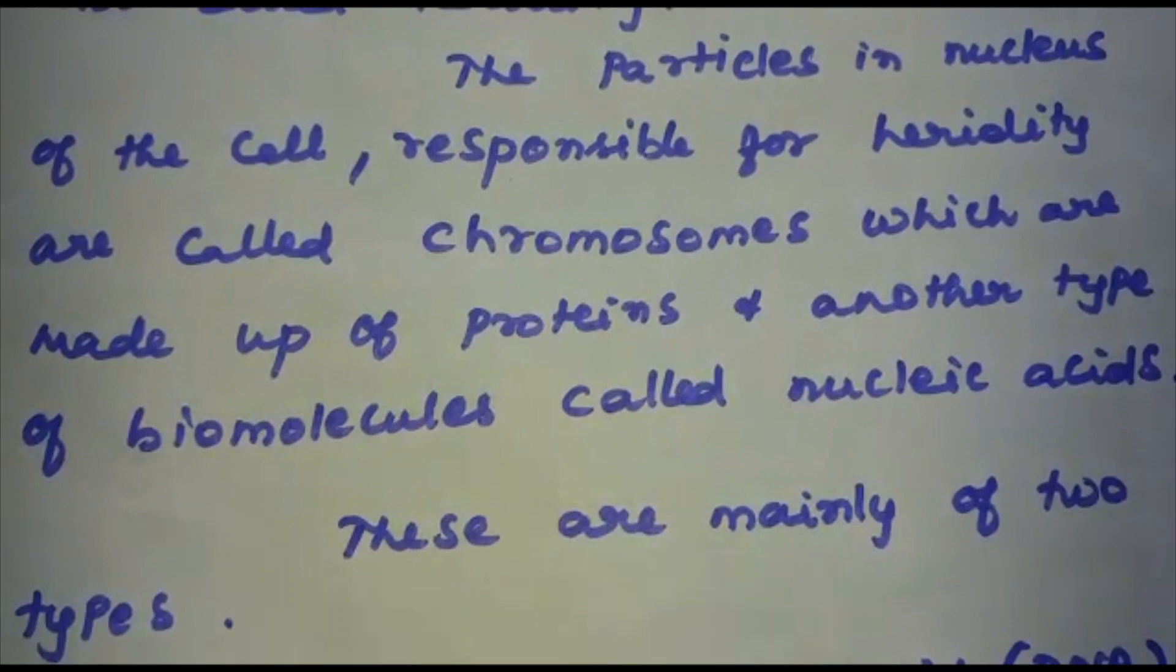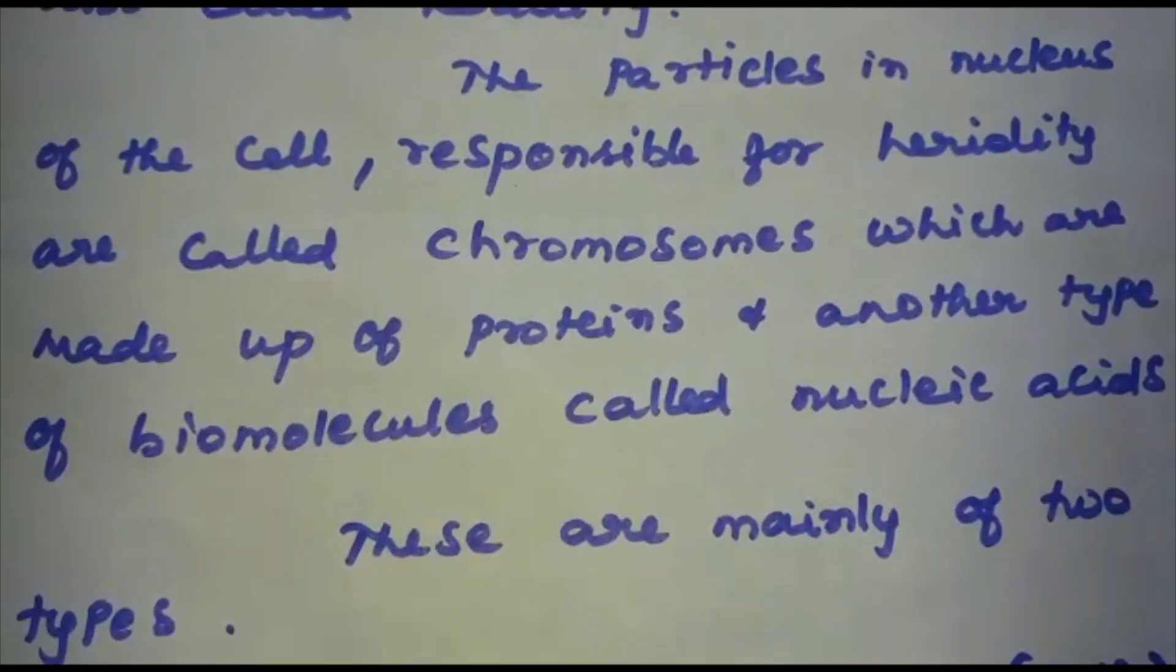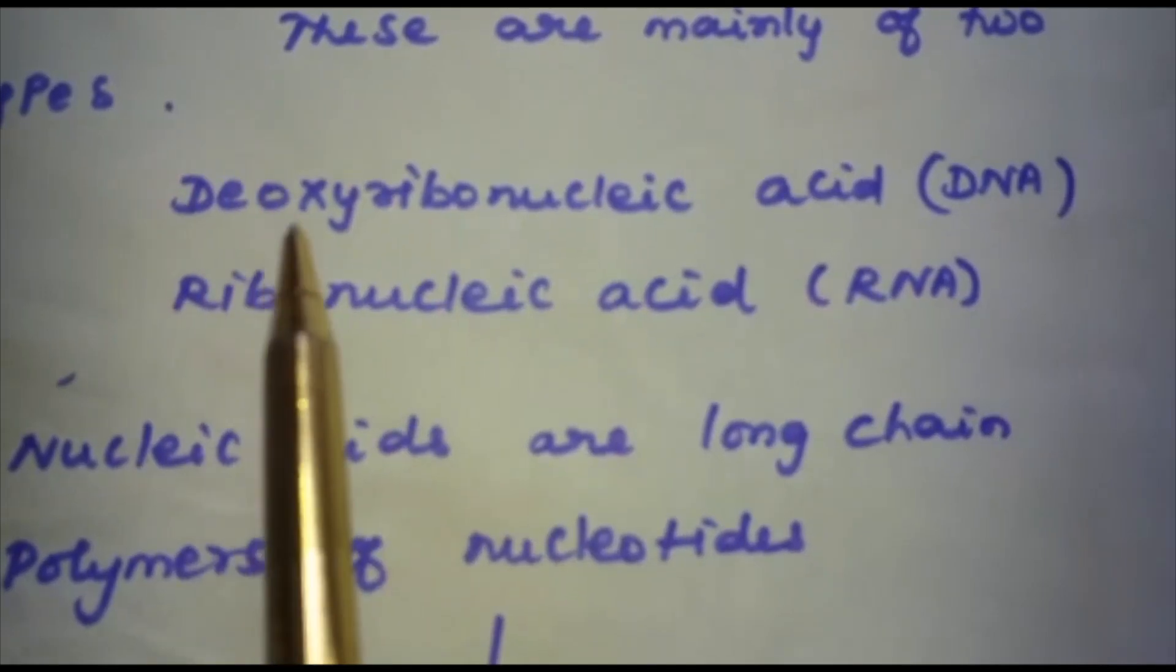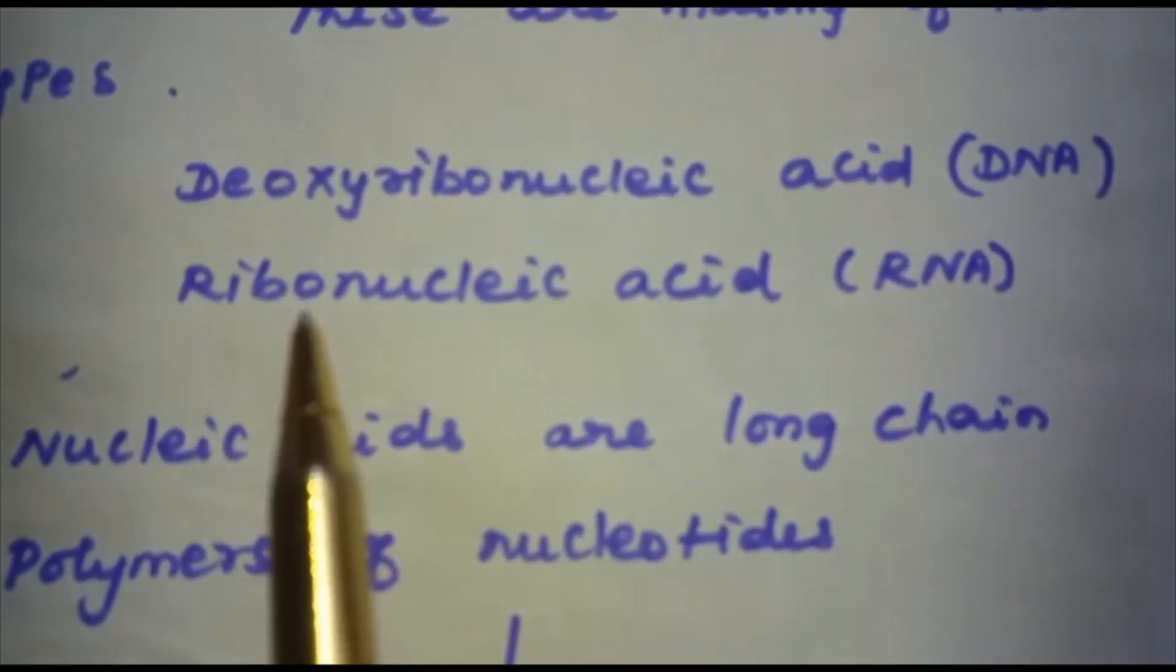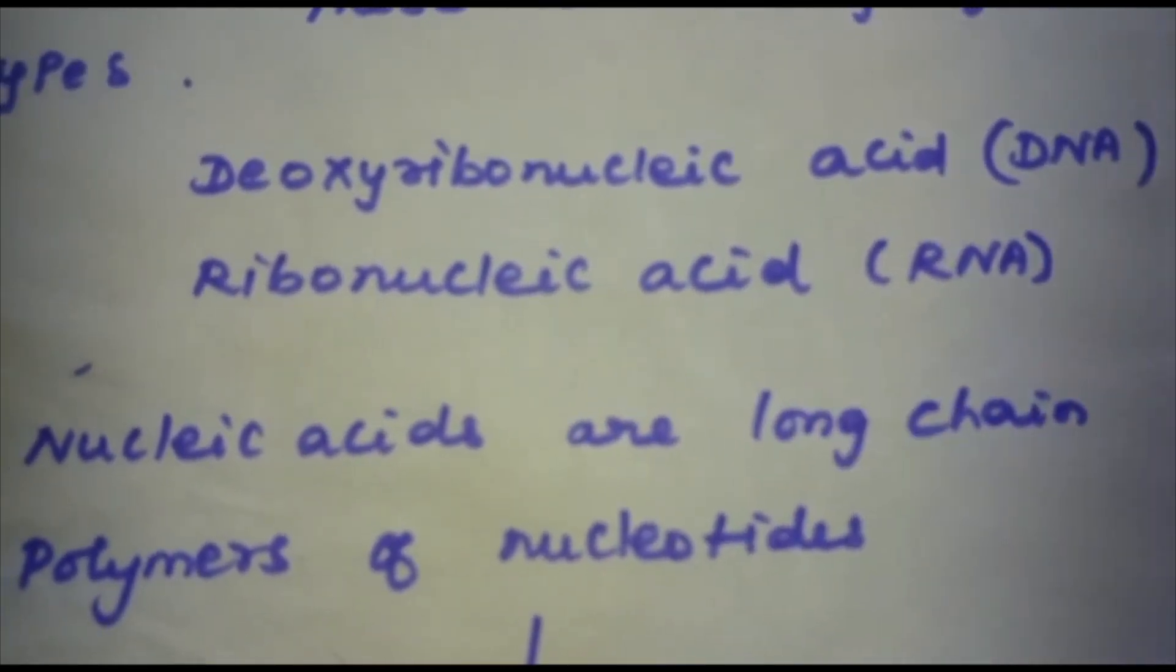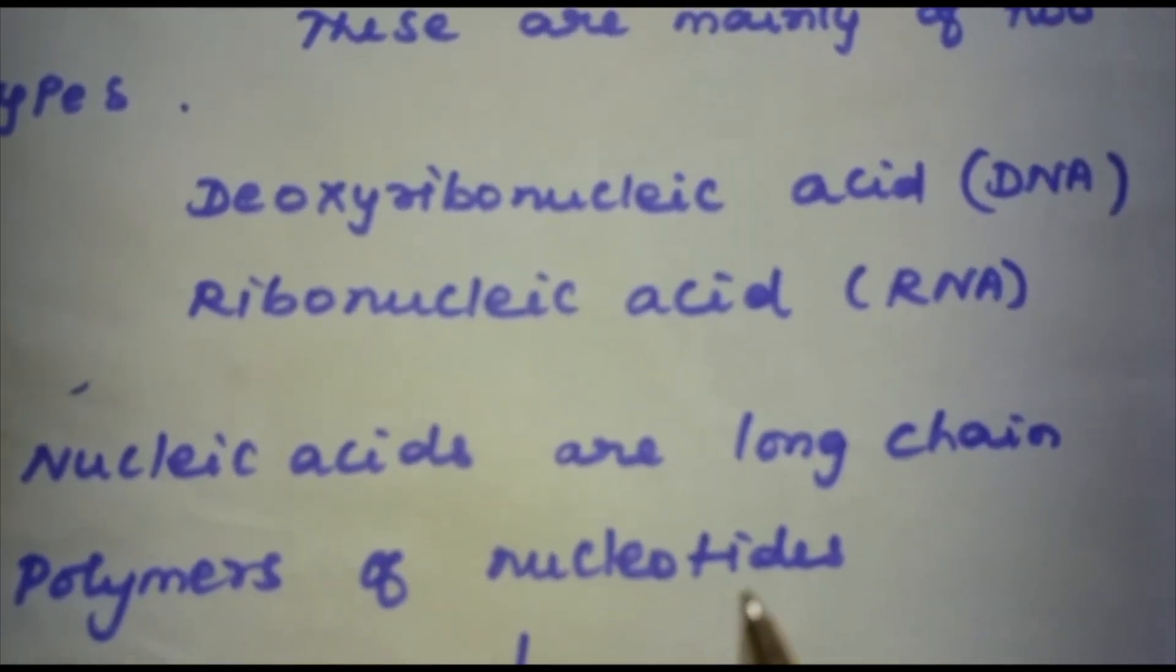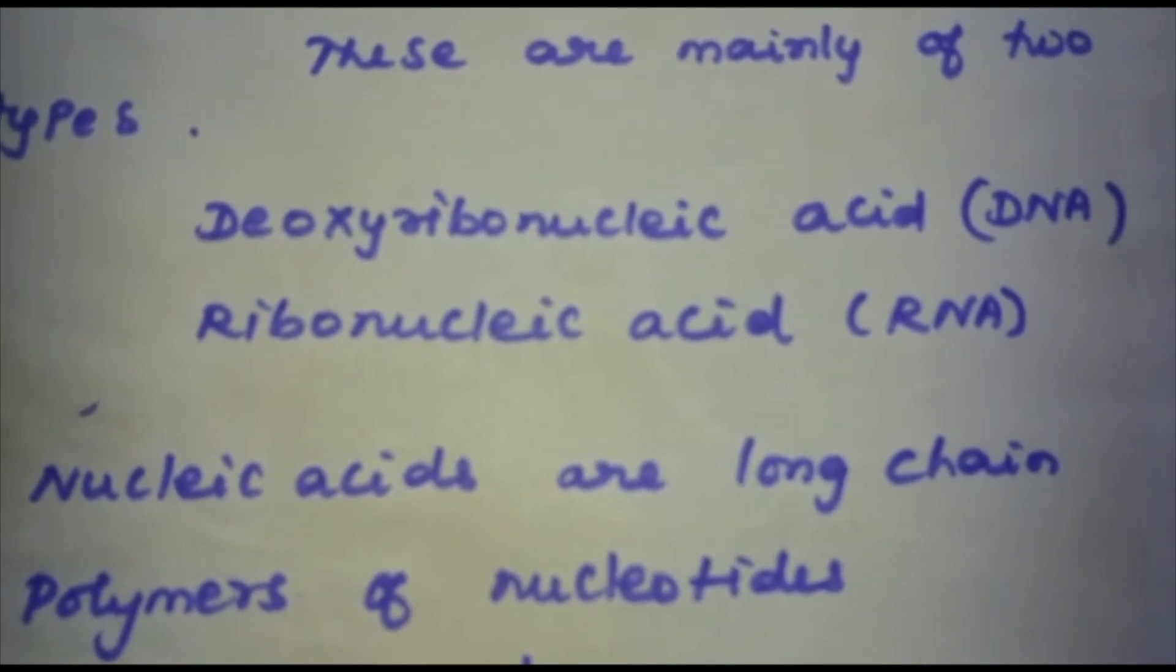These nucleic acids are mainly of two types: deoxyribonucleic acid (DNA) and ribonucleic acid (RNA). Since nucleic acids are long chain polymers of nucleotides, they are also called polynucleotides.